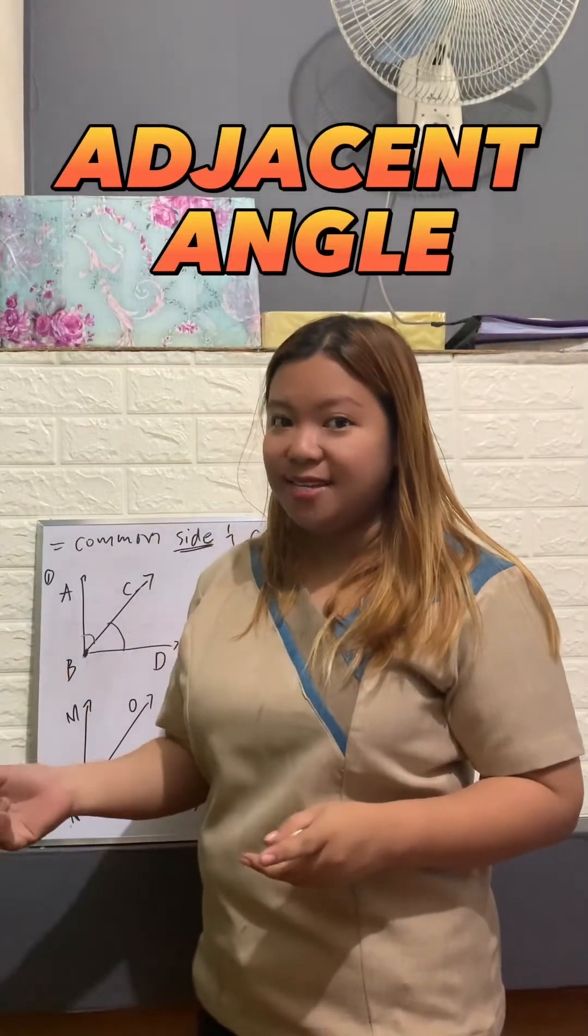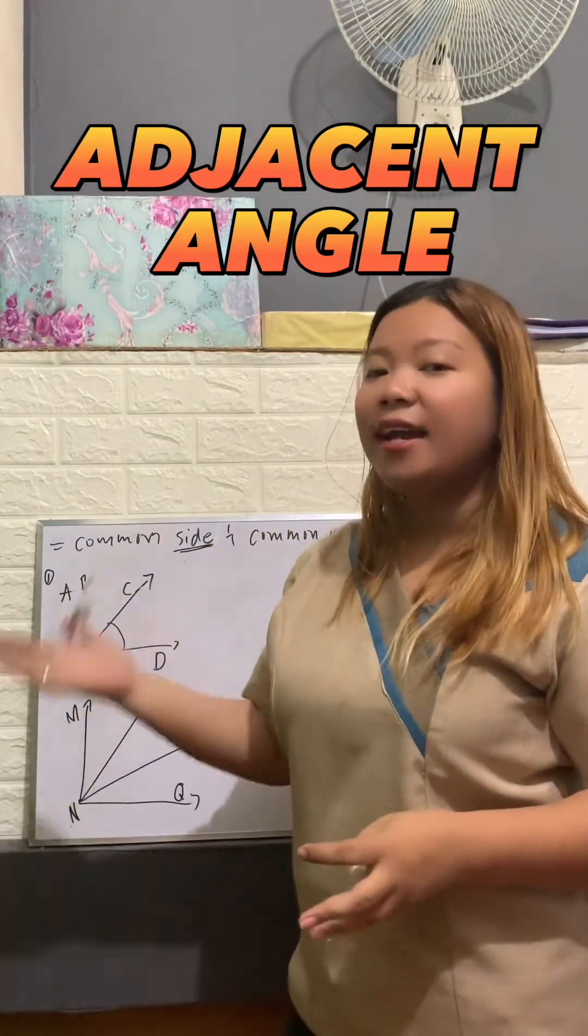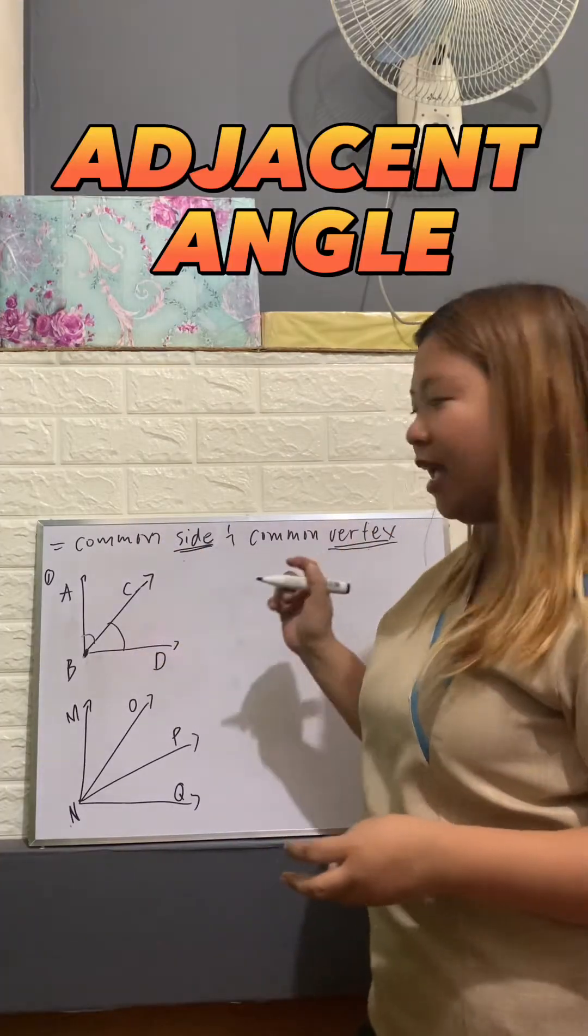Now let's talk about adjacent angles. Adjacent angles are angles that have a common side and a common vertex.